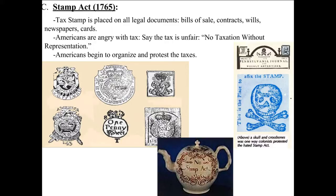That means they believed that they had no voice in Parliament — nobody there standing up for them saying these laws and new taxes are wrong. And so they began to get organized, meaning they started to work together to protest these taxes. You can see pictures of the different stamps over on the left, and some images of how the tax was protested. The colonists were saying: we see this tax as death, and we do not support it.